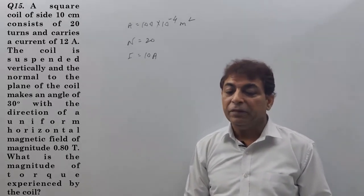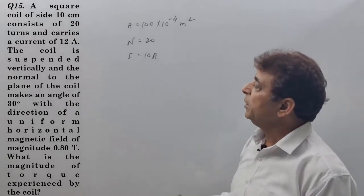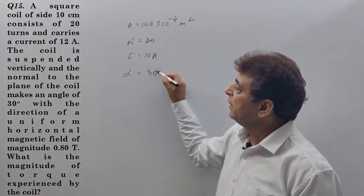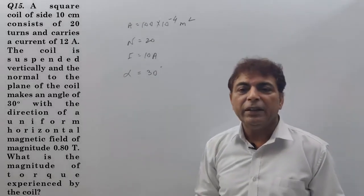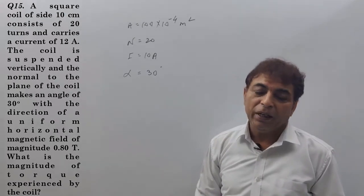The coil is suspended vertically and the normal to the plane of the coil makes an angle of 30 degrees with the direction of a uniform magnetic field.